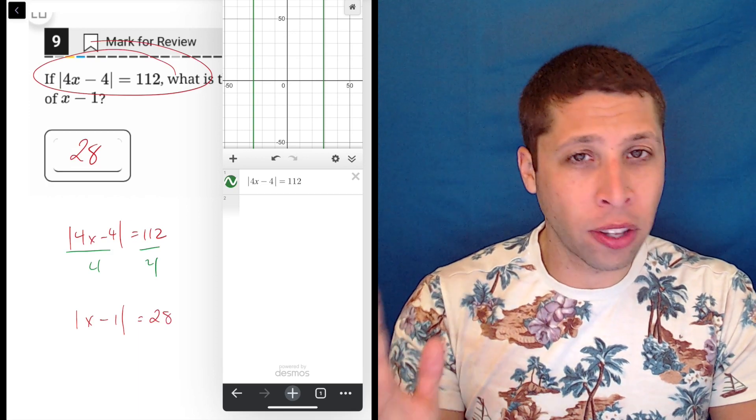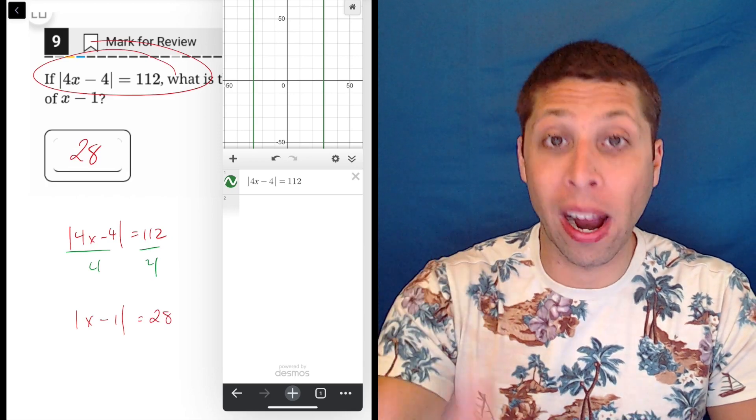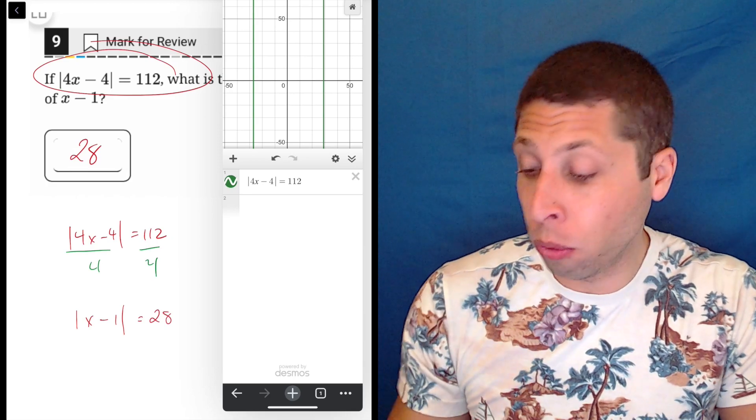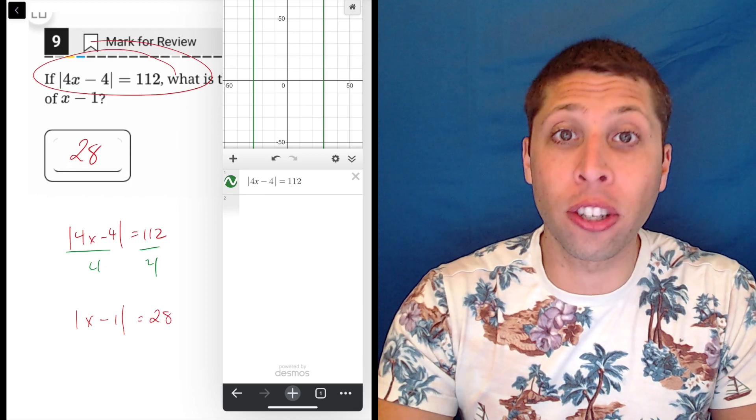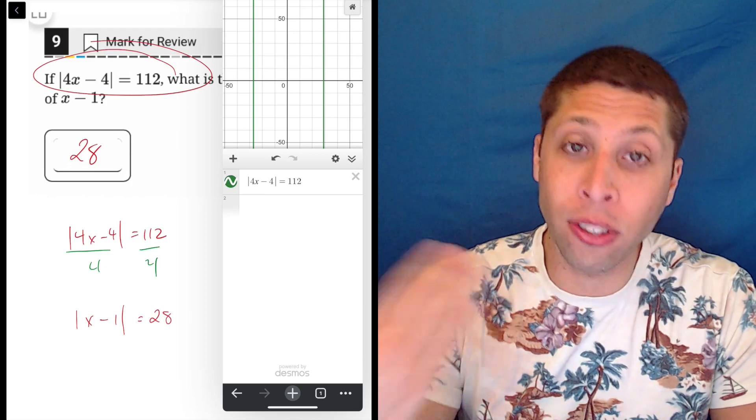And the reason they're straight up and down is that this equation does not have a y. So it's not going to graph it like a line or like something else you might graph. This is basically just an algebra equation solver at this point, and those straight vertical lines are the solutions.